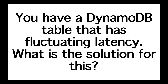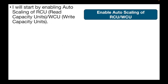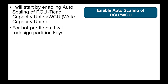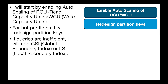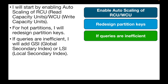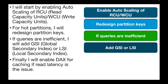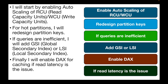The next question is: your DynamoDB table has fluctuating latency. What is the solution? First, enable auto scaling of read capacity units and write capacity units. If it's a hot partition issue, redesign the partition keys. If queries are inefficient, consider adding a Global Secondary Index or Local Secondary Index. Finally, enable DAX (DynamoDB Accelerator) for caching if read latency is the issue.